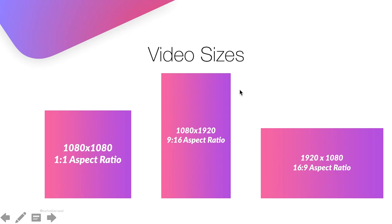For Instagram Stories, the most common type of video being used, we have a vertical video with an aspect ratio of 9:16, which is 1080x1920 pixels. So these are the image and video sizes.